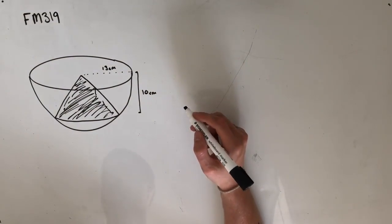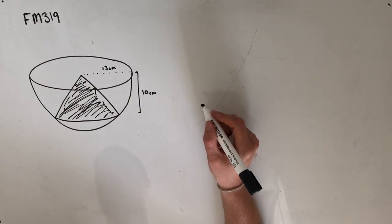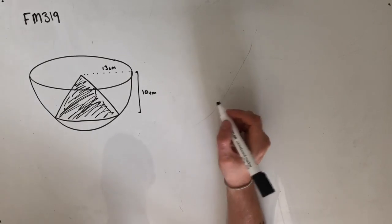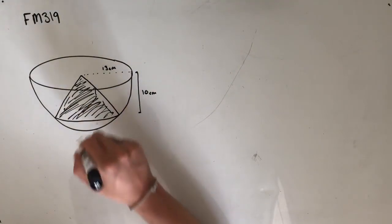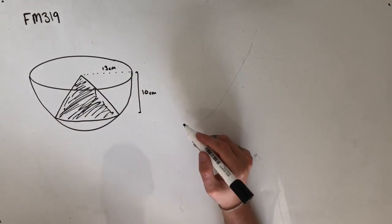The question then goes on to say: the volume of just the cone in cubic centimetres is closest to what? This makes this question a little bit easier because we're only finding the volume of the cone and not also the spherical cap.